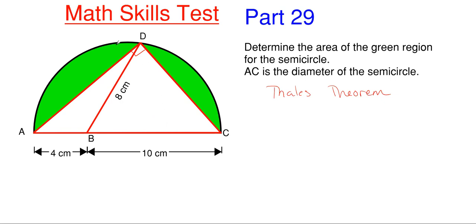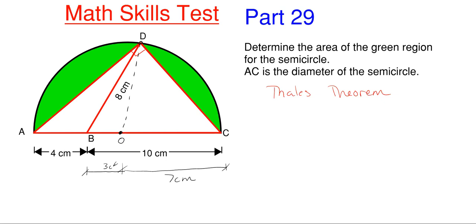I'm going to draw a line from point D to the center of our semicircle and call that point O. Our diameter is 14, so O to C is 7 centimeters and O to B is 3 centimeters. Since our radius is 7 centimeters and D is on the edge of the circle, the line D to O is also 7 centimeters.